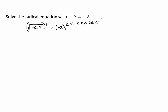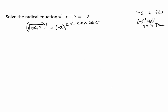Whenever you raise both sides to an even power, this introduces a possibility of an error. Why? Well, let's say we had the equation negative 3 equals 3 — that's a false equation. We could actually turn it into a true equation by just squaring both sides: 9 equals 9, which is true. So by squaring both sides, we took a false equation and turned it into a true one.